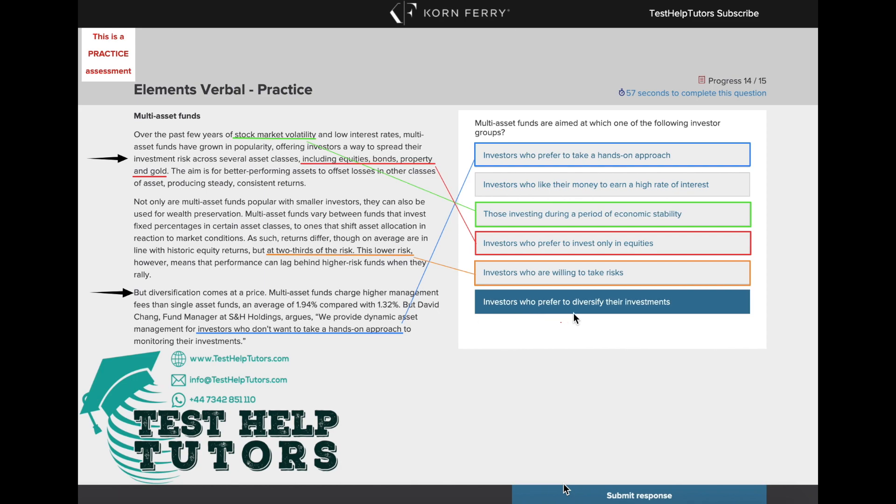However, we can say that the last option here, investors who prefer to diversify their investments, is correct. Even if we don't go through the process of elimination, we know multi-asset funds are essentially investments that spread their risk across several asset classes including equities, bonds, property and gold, and this diversification comes at a price.